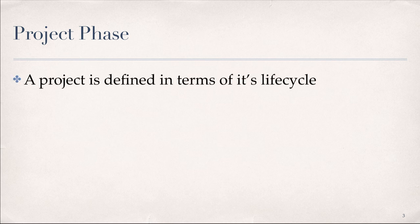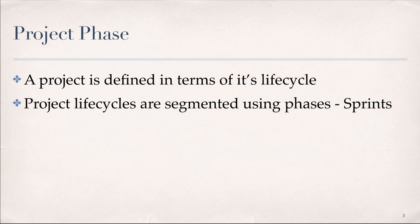We begin by providing a definition for project phase in the context of a project development life cycle. In the last module we said that a project life cycle represents the series of phases or iterations that a project goes through from start to completion. The work takes place by breaking the project into phases. A project phase is a collection of logically related project activities that culminates in the completion of one or more deliverables. In Agile, we refer to project phases as project life cycle phases or sprints.